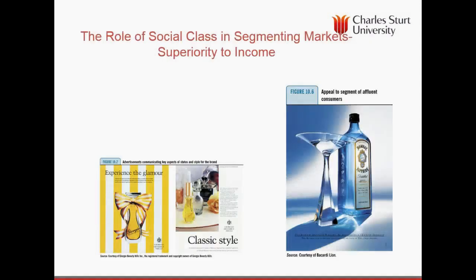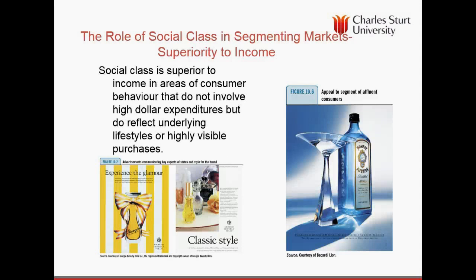When is it a good idea to use social class? As hinted earlier, it's superior in areas that don't involve high dollar expenditures but do reflect underlying lifestyles or involve highly visible products. Perfume and alcohol are two classic areas where social class structures are important, as we saw with cat food and Victoria Bitter.